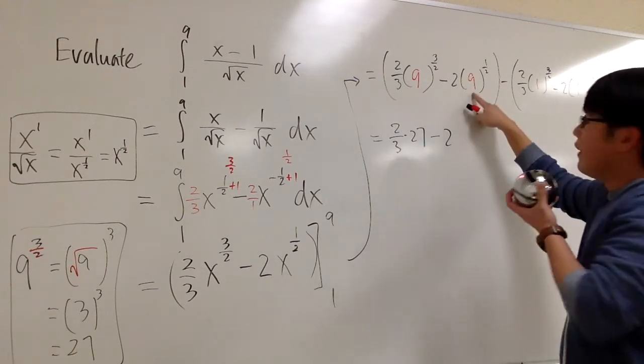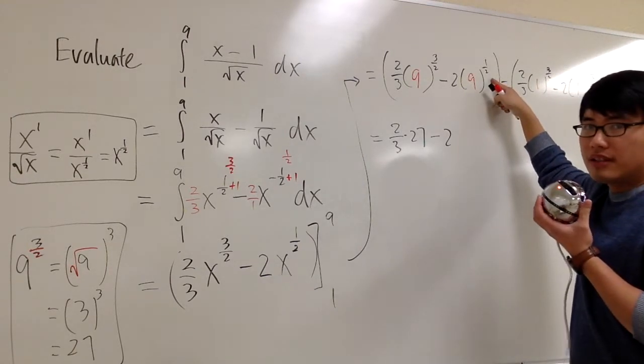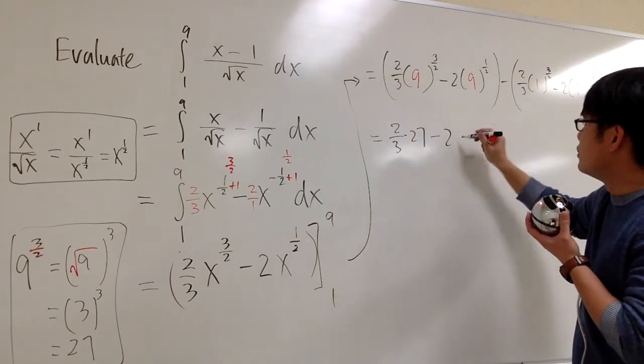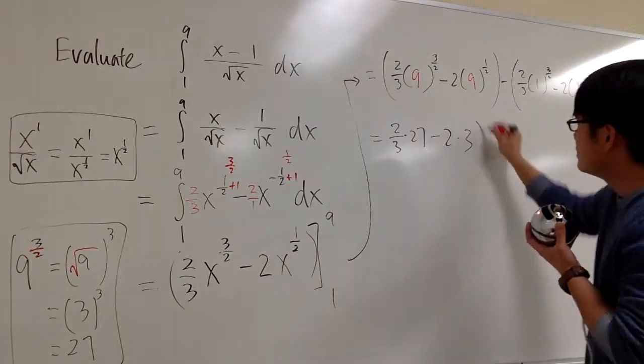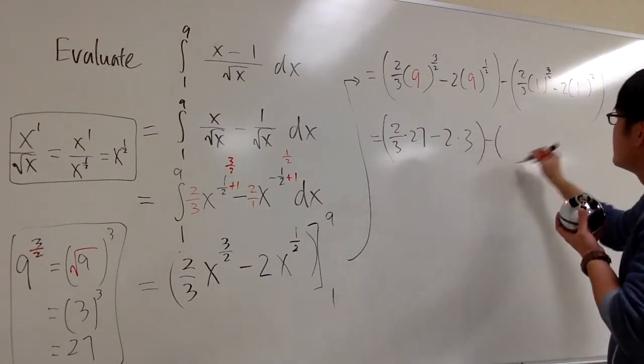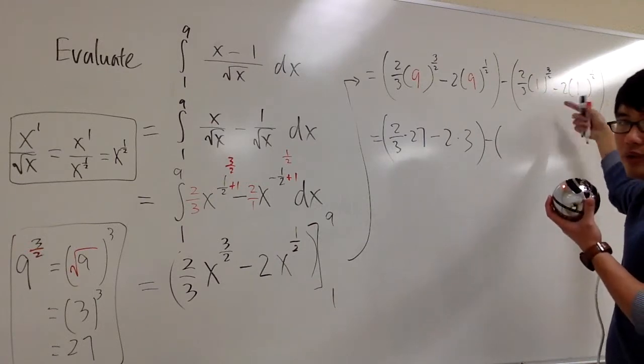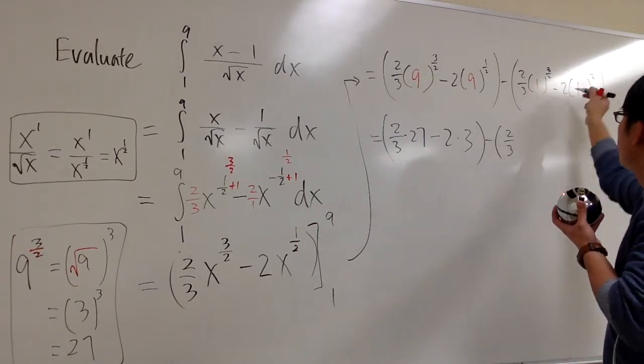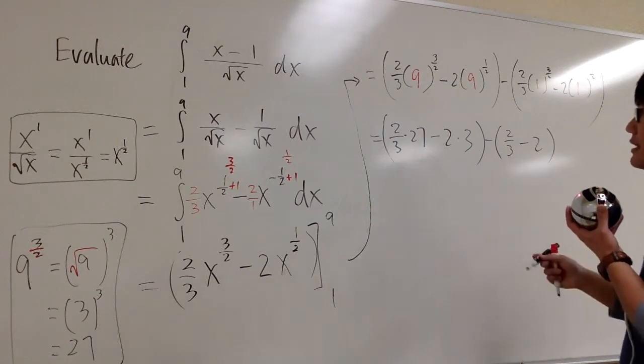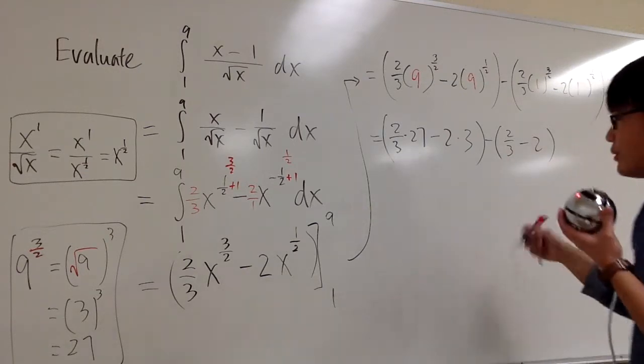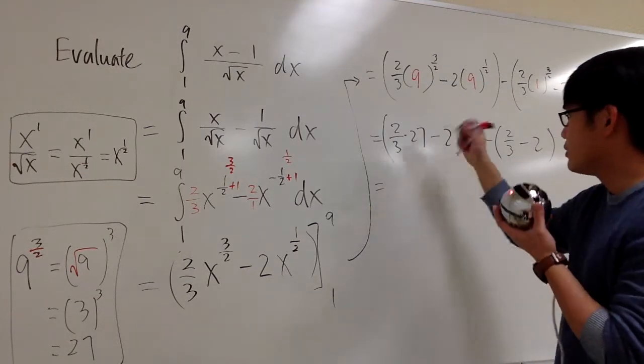So, here we have two-thirds times twenty-seven for that. Minus, this is two. Nine to the one-half power, it's like the same as saying square root of nine, which is three. So, let me multiply by three. This is the first part. Minus, one to any power is just one, so we are good. We have just two-thirds minus two. Like that. And a lot more fractions. Anyways, just do more for fun.